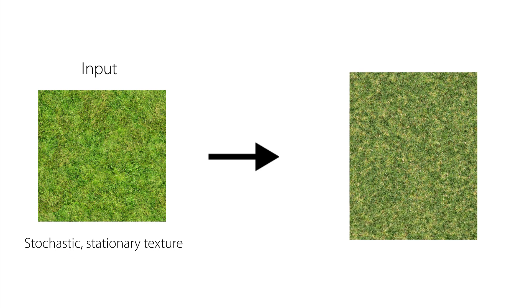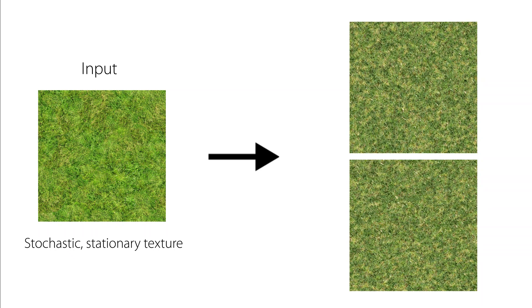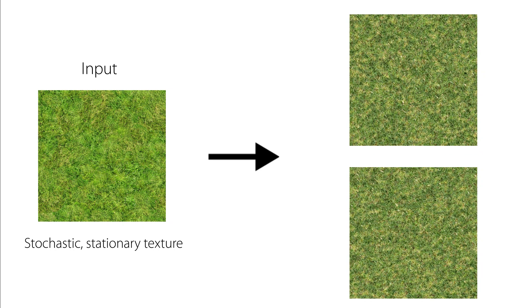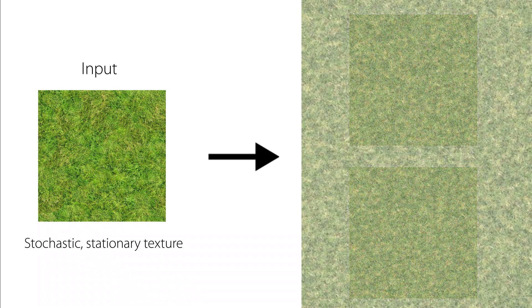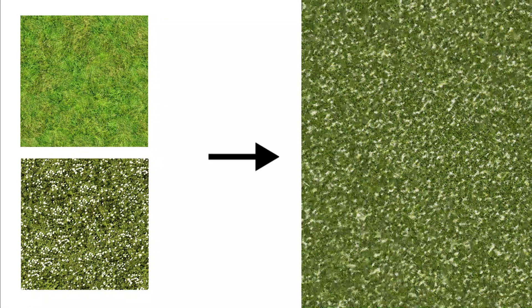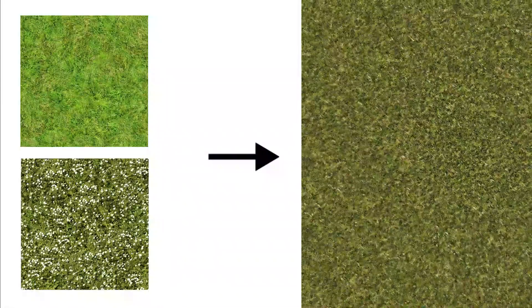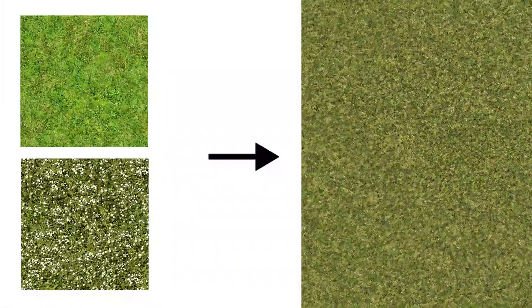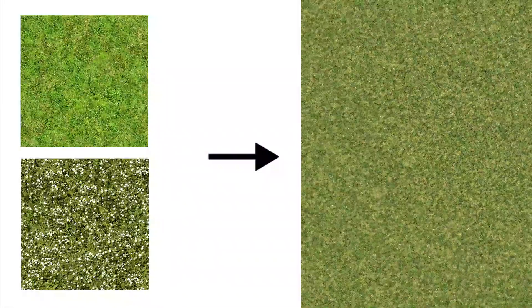From a single image, we can produce diverse output textures. Our output textures can be of arbitrary size. The method also allows for texture interpolation, as we construct a meaningful latent space.